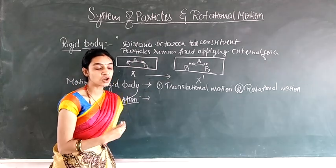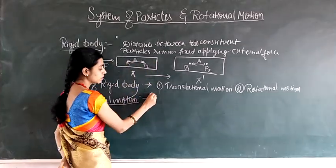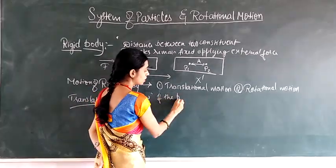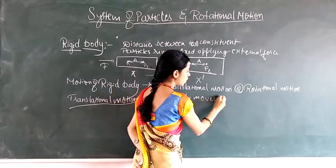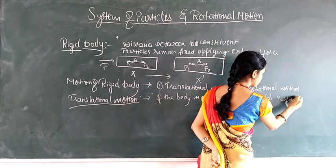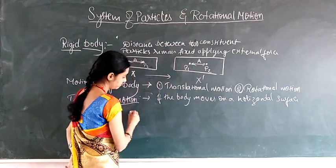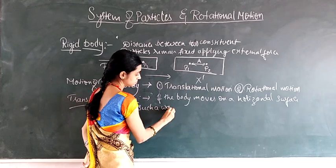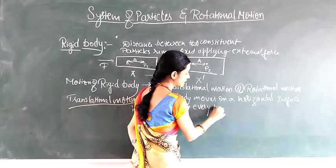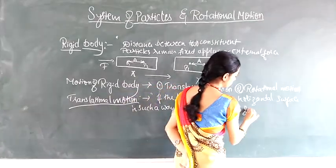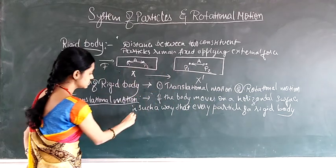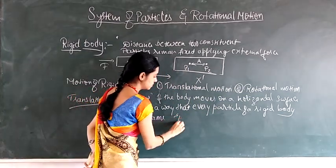The first type is translational motion. A rigid body is said to have translational motion if the body moves on a horizontal surface in such a way that every particle of the rigid body has the same speed.